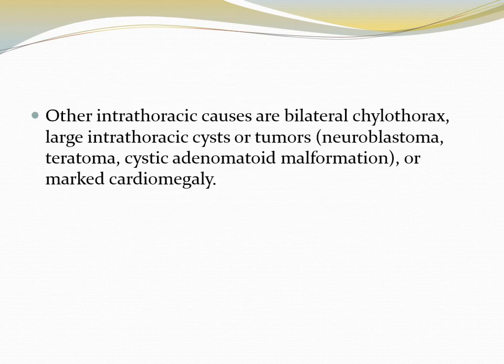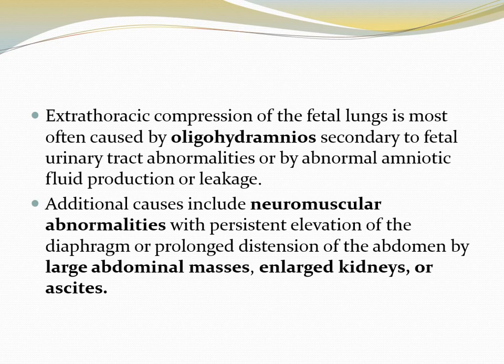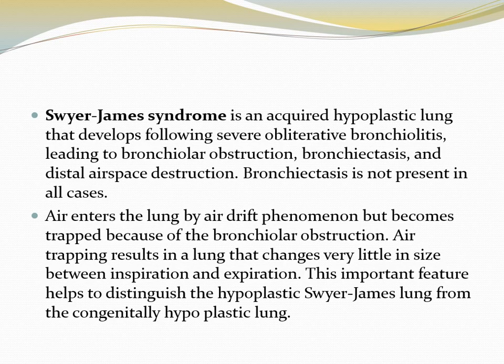Other intrathoracic causes are bilateral oligothorax, large intrathoracic cysts or tumors such as neuroblastoma, teratoma, cystic adenomatoid malformation, or marked cardiomegaly. Extrathoracic compression of the fetal lung is most often caused by oligohydramnios; additional causes include neuromuscular abnormalities, large abdominal masses, enlarged kidneys, or ascites. Swyer-James syndrome is an acquired hypoplastic lung that develops following severe obliterative bronchiolitis, leading to bronchiolar obstruction, bronchiectasis, and distal airspace destruction.